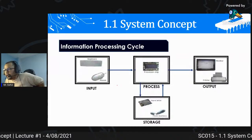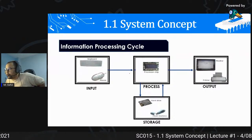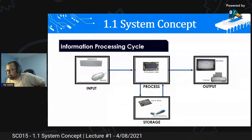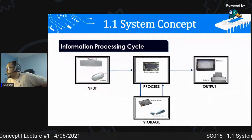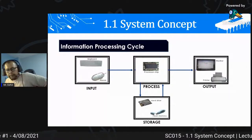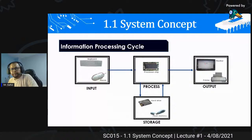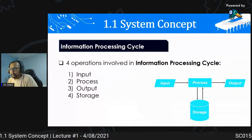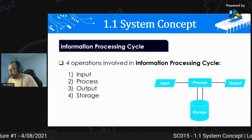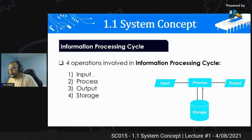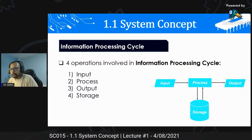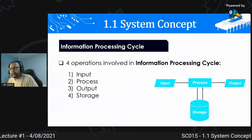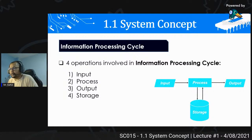Contoh dalam bentuk gambar - daripada input keyboard atau mouse, dia masuk ke proses dekat processor, dalam masa yang sama dia akan access memory, hard drive, flash drive dan sebagainya, seterusnya pergi ke output device. Empat aktiviti utama: input, process, output, storage - cycle ini mesti bermula dengan input. Tidak boleh start dengan output dulu.